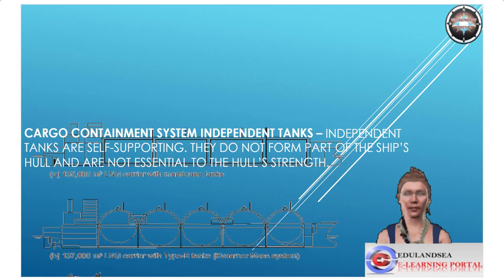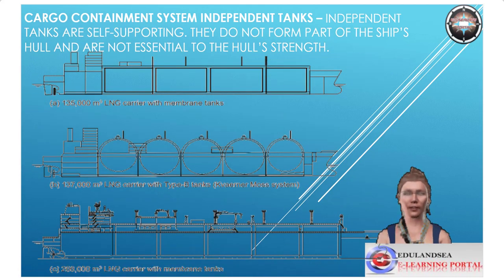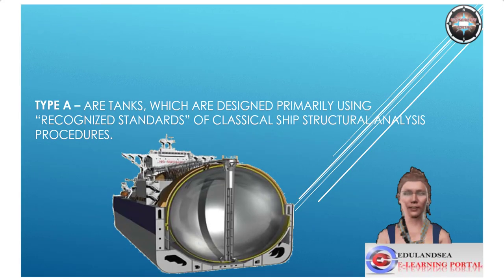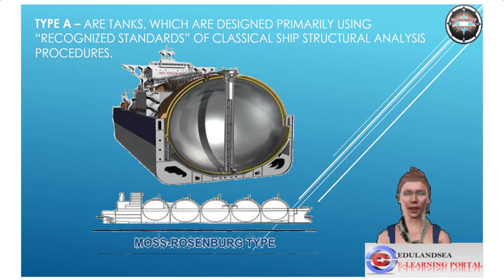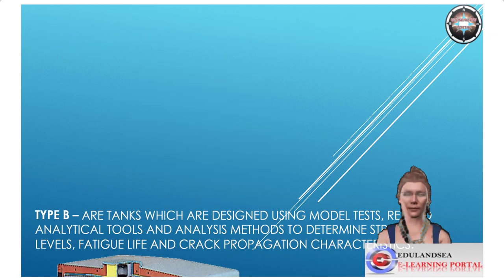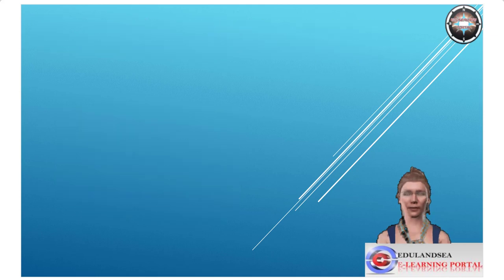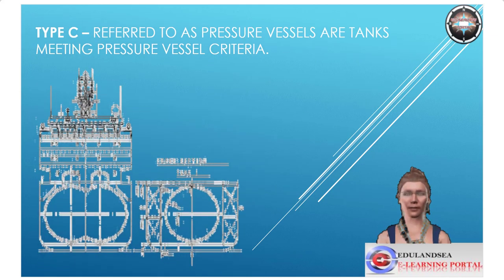Cargo containment system — independent tanks: independent tanks are self-supporting; they do not form part of the ship's hull and are not essential to the hull's strength. Type A: tanks designed primarily using recognized standards of classical ship structural analysis procedures. Type B: tanks designed using model tests, refined analytical tools and analysis methods to determine stress levels, fatigue life and crack propagation characteristics. Type C: referred to as pressure vessels, are tanks meeting pressure vessel criteria.